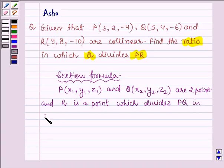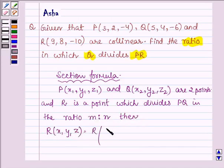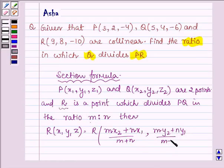in the ratio M is to N, then R with coordinates x, y, z is given by M into x2 plus N into x1 upon M plus N. This is the case when the point R divides the line segment internally. M into y2 plus N into y1 upon M plus N, and z is M into z2 plus N into z1 upon M plus N.